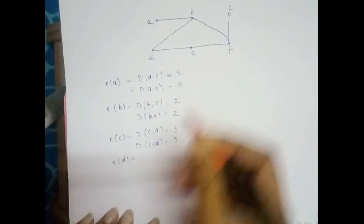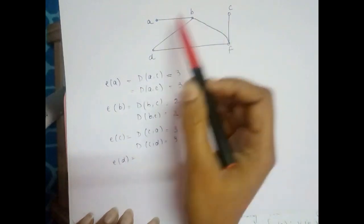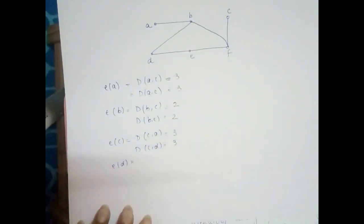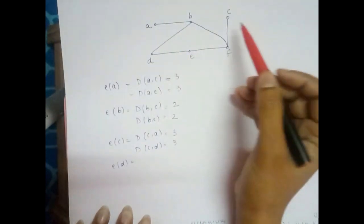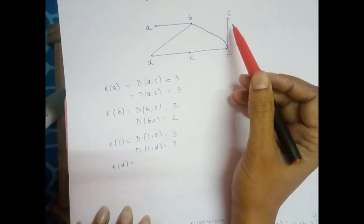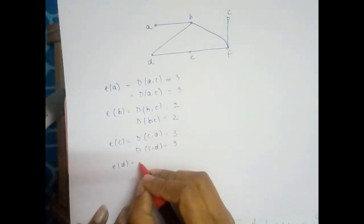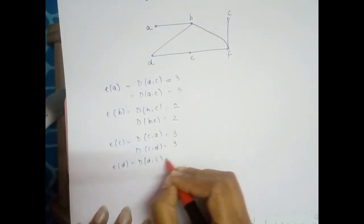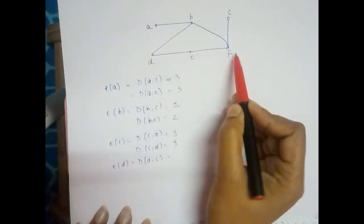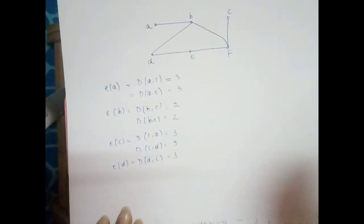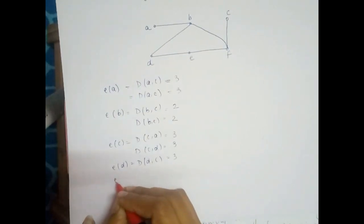For eccentricity of vertex d, we take the farthest vertex — for example c. Distance d to c: d to e, e to f, f to c gives 3 edges. No other vertex yields a greater distance from d, so the eccentricity of d is 3.